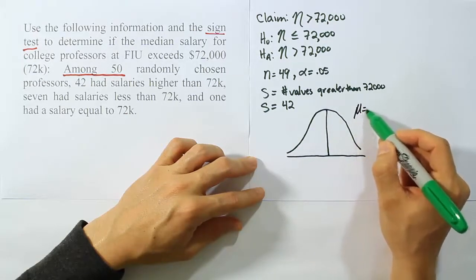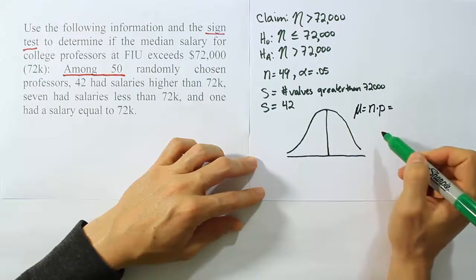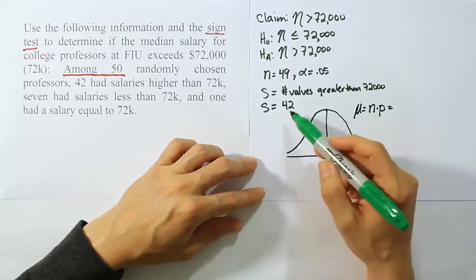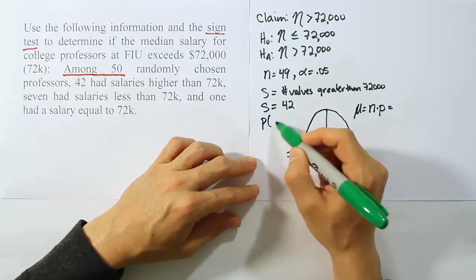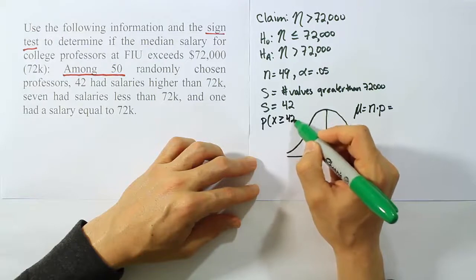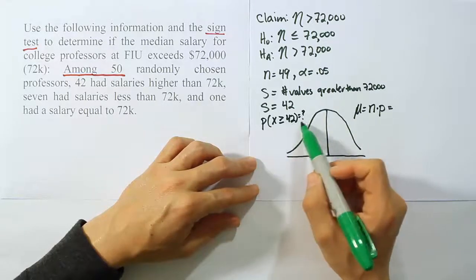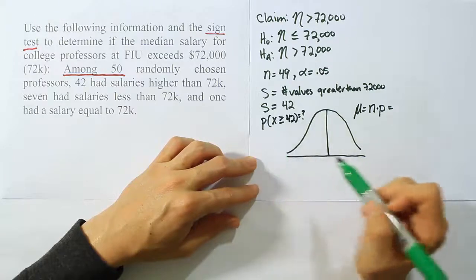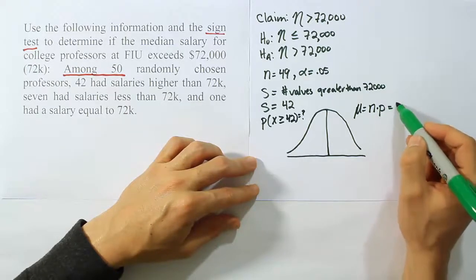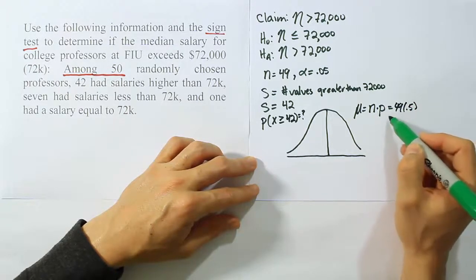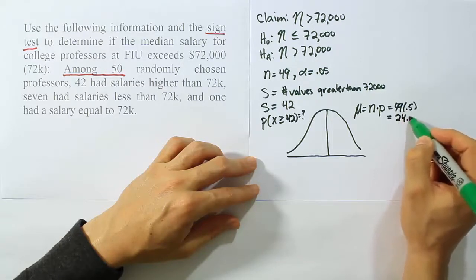It turns out that the mean for the bell curve, since we're assuming a binomial distribution, is going to be N times p. In our case, we're going to be looking for the probability that we would have this number of values greater than. So we're trying to come up with this p-value, the probability that X is greater than or equal to S, in this case 42. The mean for that is going to be N times p. So in this case, it'll be 49 times 0.5. So we'll just do half of 49. So half of 40 is 20, plus another 4.5. So I'm going to have 24.5 for the mean.